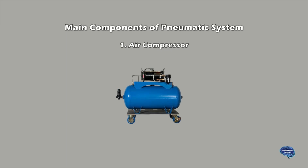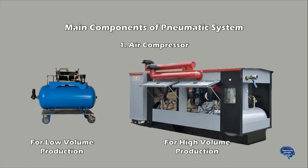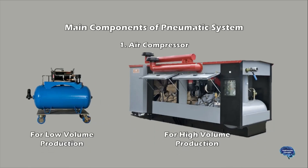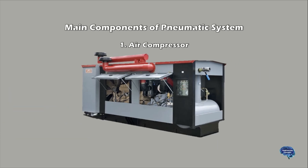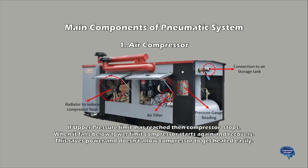An air compressor is used to produce compressed air for the system. It is a device that converts power into potential energy and stores it as pressurized air. An air compressor forces more and more air into a storage tank, increasing the pressure to a required pre-specified pressure.